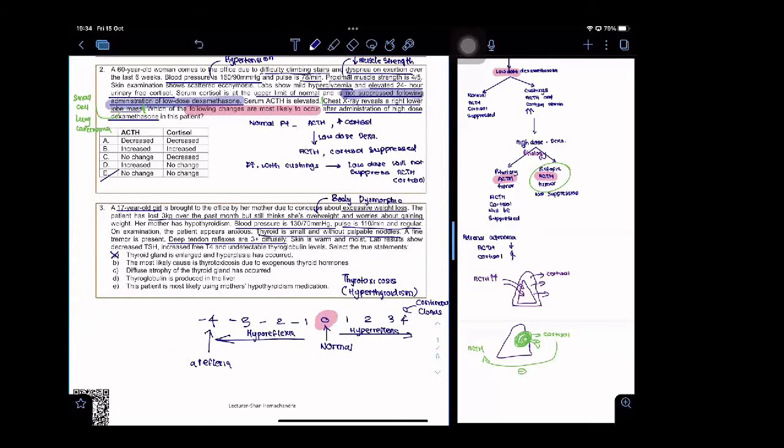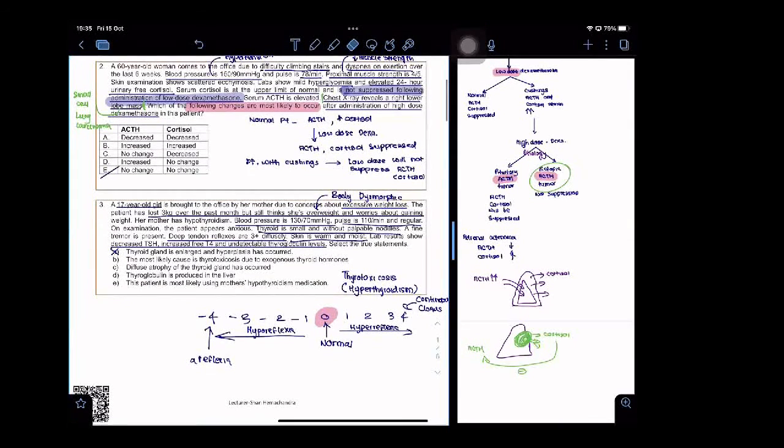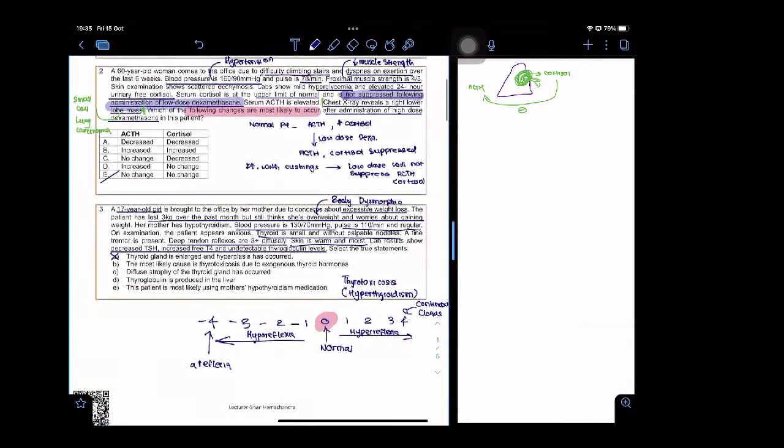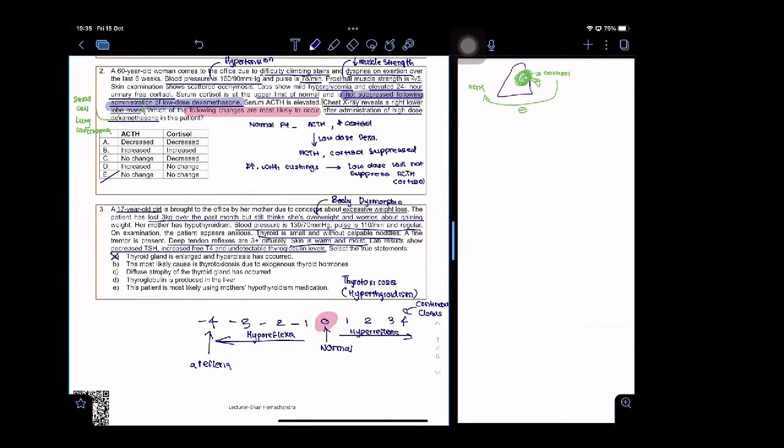Okay, skin is warm and moist. Lab results show decreased TSH, increased free T4, and undetectable thyroglobulin levels. Now let's talk about that. If the patient comes, let's take each answer first. Thyroid gland is enlarged and hyperplasia has occurred - that's wrong. The history says it's atrophic.